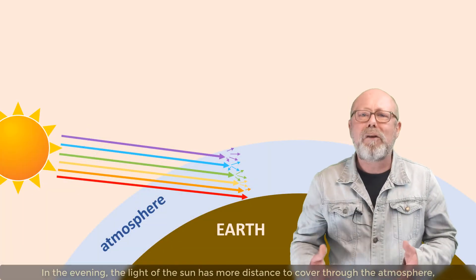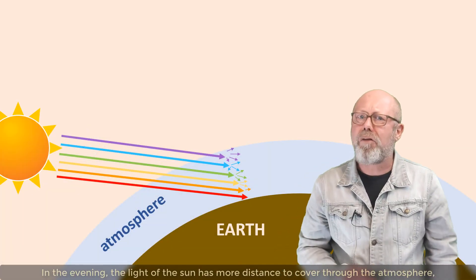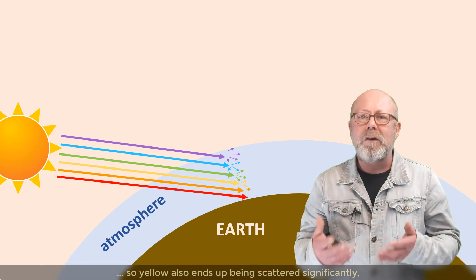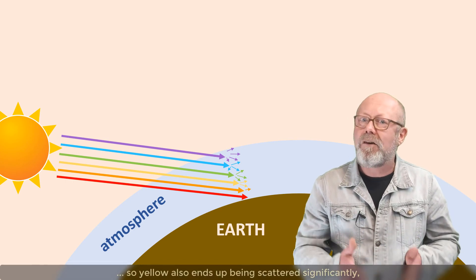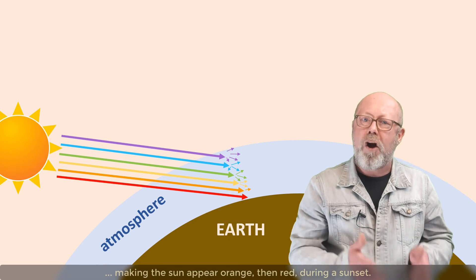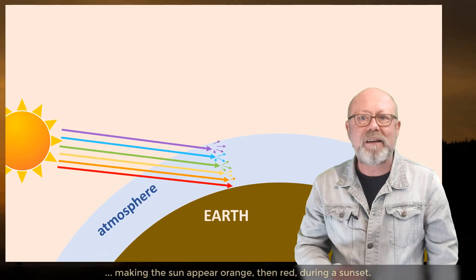In the evening, the light of the Sun has more distance to cover through the atmosphere. So yellow also ends up being scattered significantly, making the Sun appear orange, then red, during sunset.